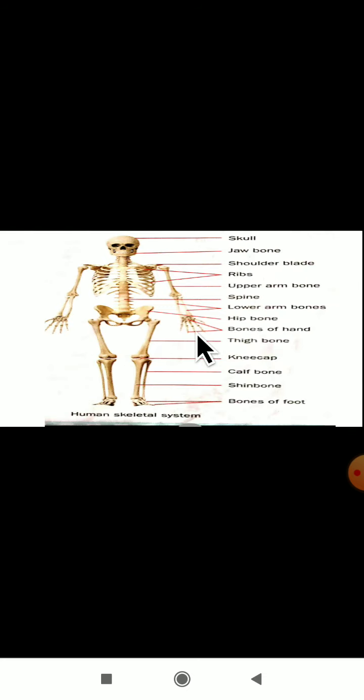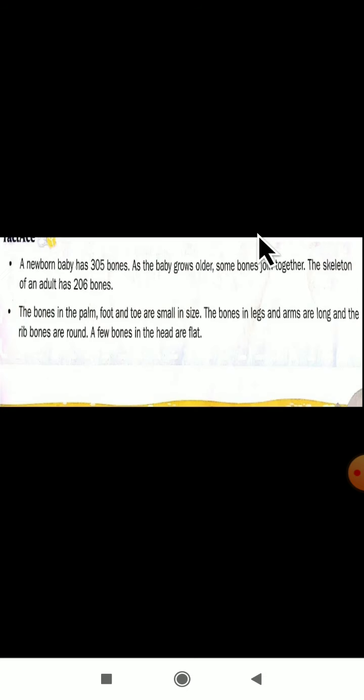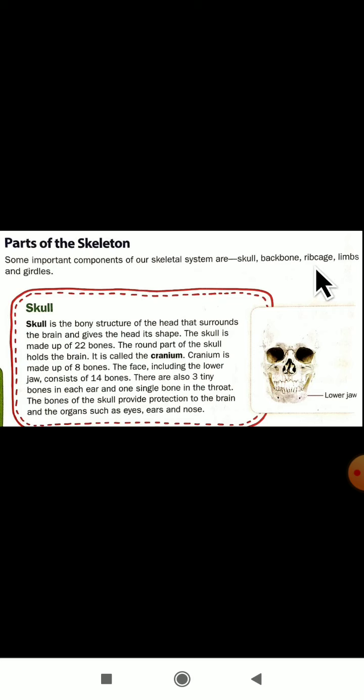Let us see the parts of the skeleton in detail. Some important components of our skeletal system are: skull, backbone, ribcage, limbs, and girdles. These are the five main components of our skeletal system. Today we will study about the skull part only, so that you will understand very clearly.